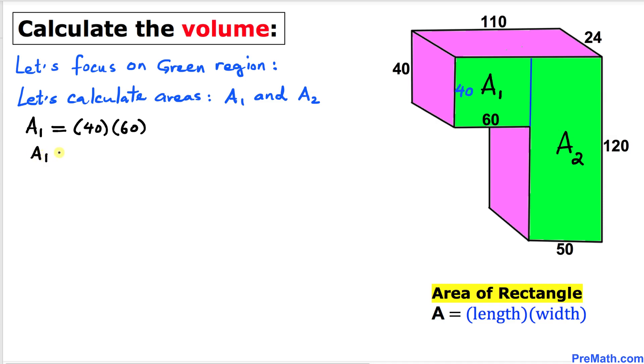Now let's calculate the area A2. A2 is going to be our dimensions 50 times 120. If we multiply them, we get 6000 square units.